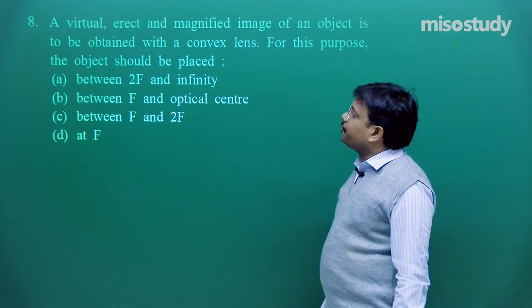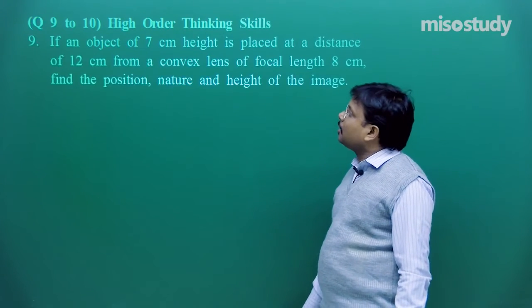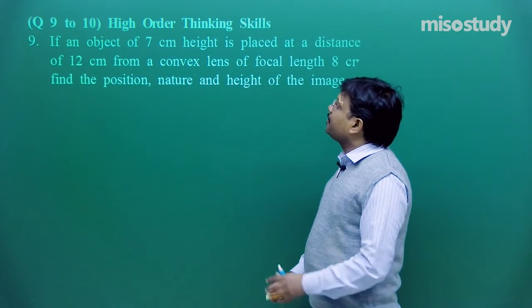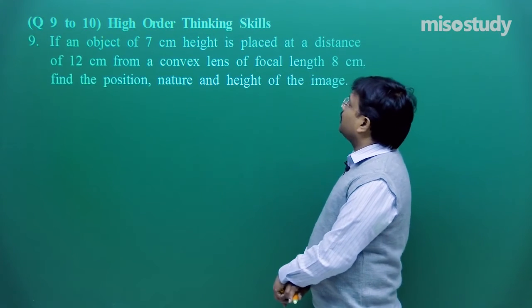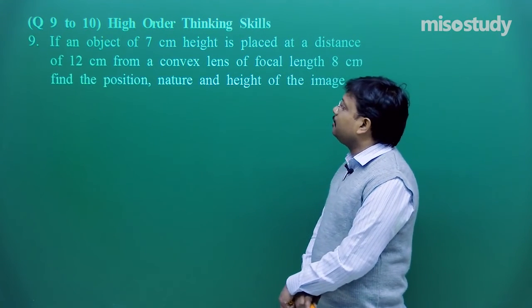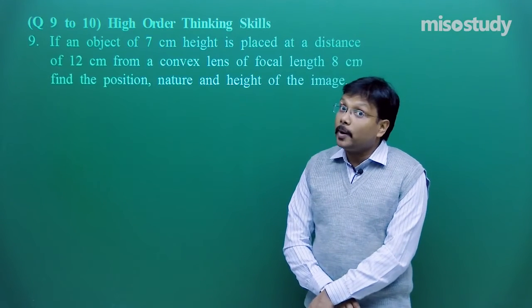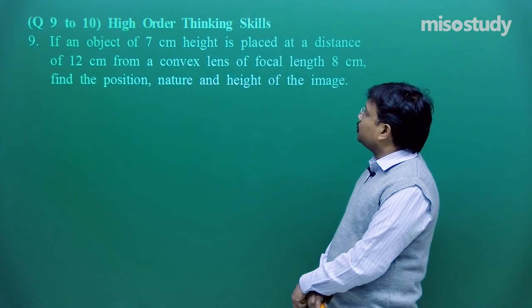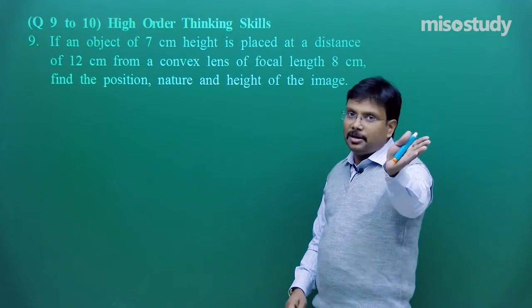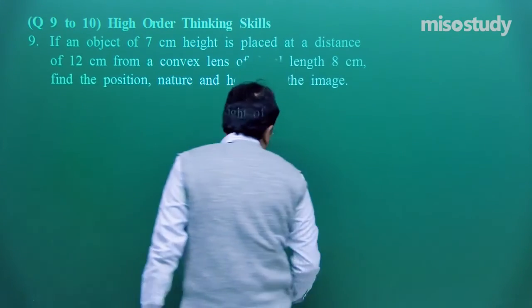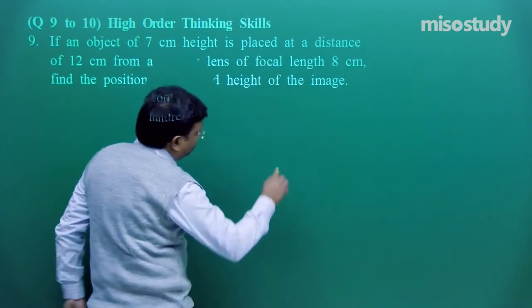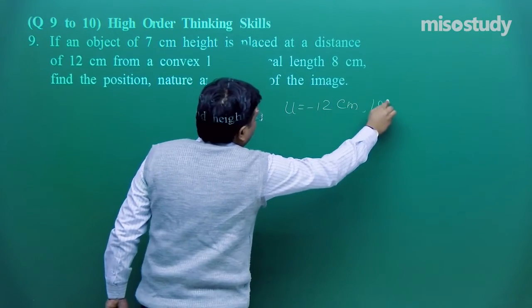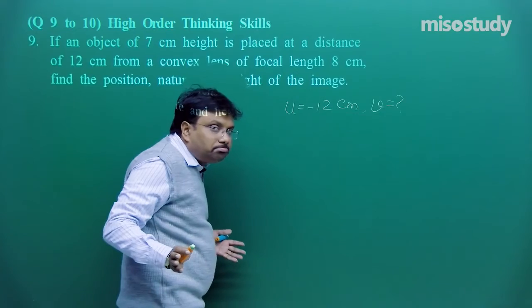Then it comes question number 9, 9 and 10. High order thinking skills. If an object of 7 centimeter height is placed at a distance of 12 centimeter from a convex mirror, u is equal to 12, focal length f is equal to 8. Find the position, nature and height of the image. Let us apply the formula. So the formula is u is equal to minus 12 centimeter, v is equal to, and f is equal to how much? F is equal to plus 8 centimeter.